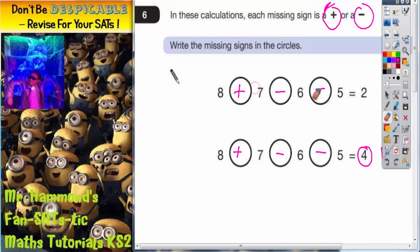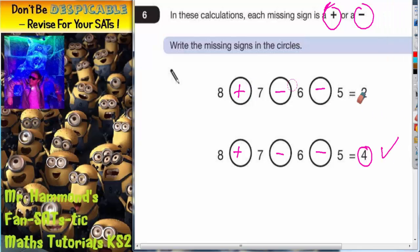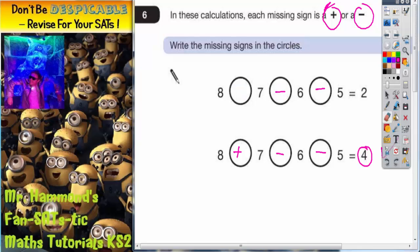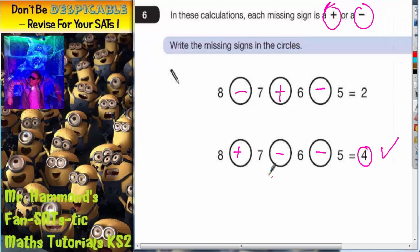But we still aren't happy with this one. We were almost correct because 4 is almost equal to 2. So maybe we need to have 2 subtract signs which are just in a different order. So let's try changing that one to subtract and having this one as an add. Let's see what that does. 8 subtract 7 is 1, 1 add 6 is 7, and 7 subtract 5 is indeed 2. So that actually works.